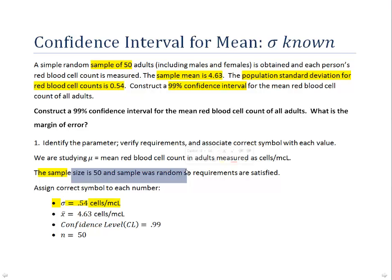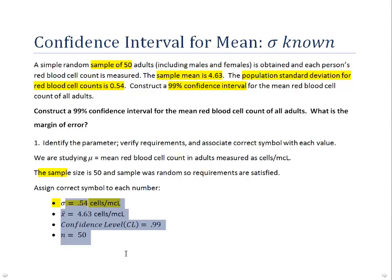Once you've identified the parameter and verified the requirements, look at each number in the problem carefully and assign each its proper statistical symbol. 0.54 is sigma — a population standard deviation, not S. 4.63 is x-bar. Our confidence level is 99%, written as 0.99. And the sample size is 50.